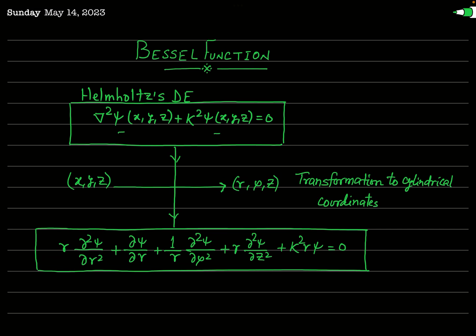This is the Helmholtz differential equation. We will now transform this Helmholtz differential equation from Cartesian coordinates into cylindrical coordinates, transforming x, y, z into r, phi, z. The equation becomes: r times d²ψ/dr² plus dψ/dr plus (1/r) d²ψ/dφ² plus r times d²ψ/dz² plus k²·r·ψ equals zero.